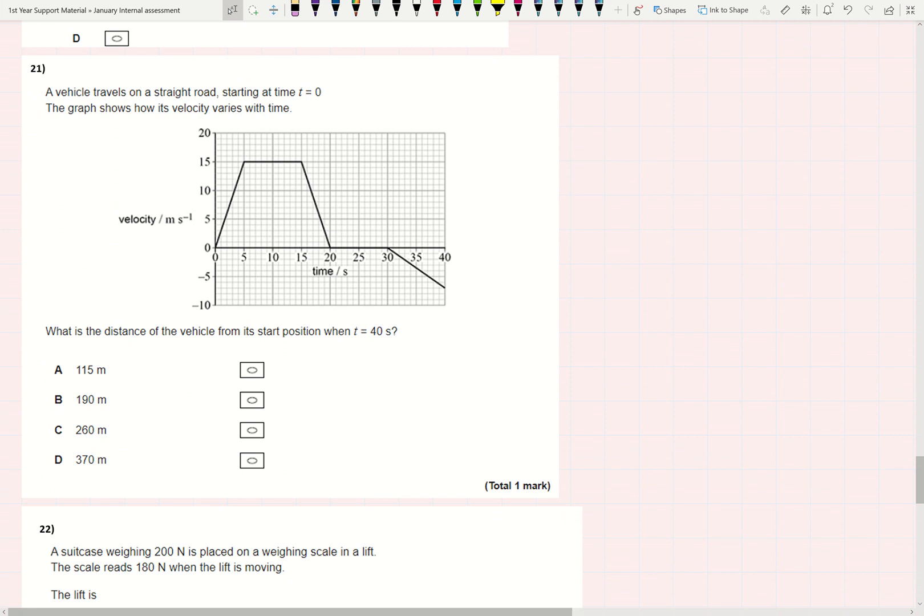Number 21. The vehicle travels on a straight road, starting at time T equals 0. The graph shows how velocity varies with time. In order to find the distance from its start position, that's going to be the displacement. Displacement's a vector, so I'm traveling a straight road, so I'm just going forwards and backwards.